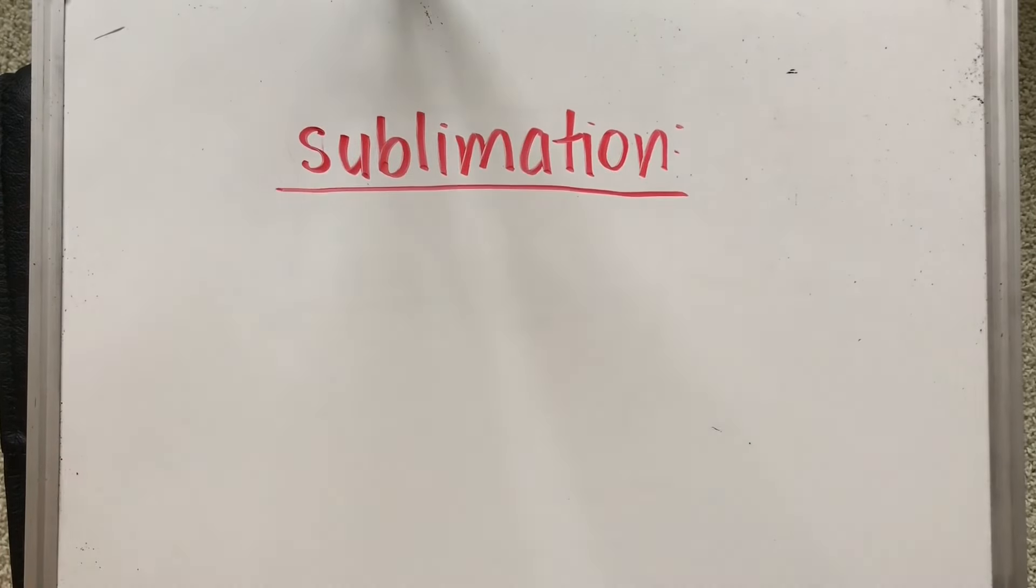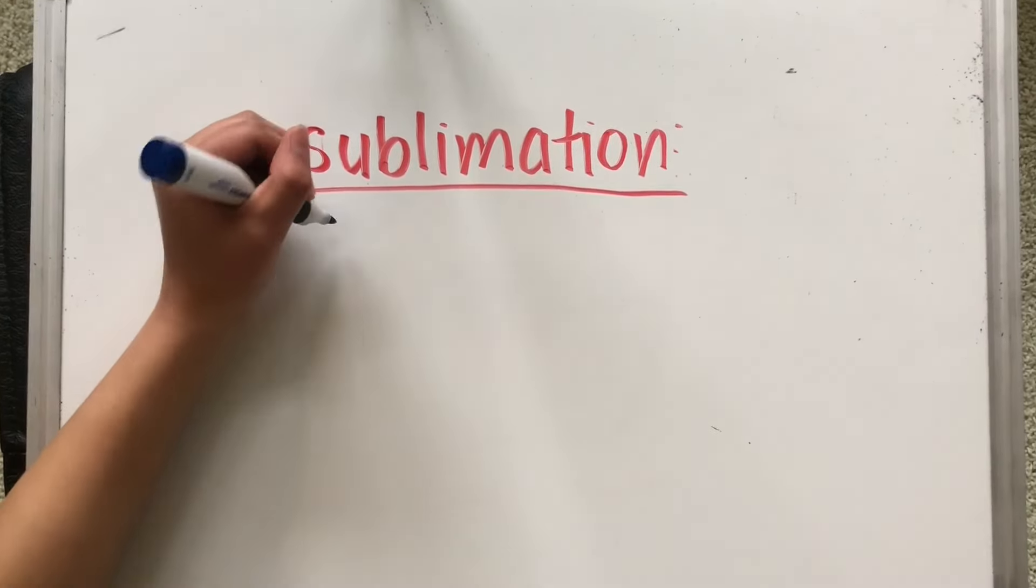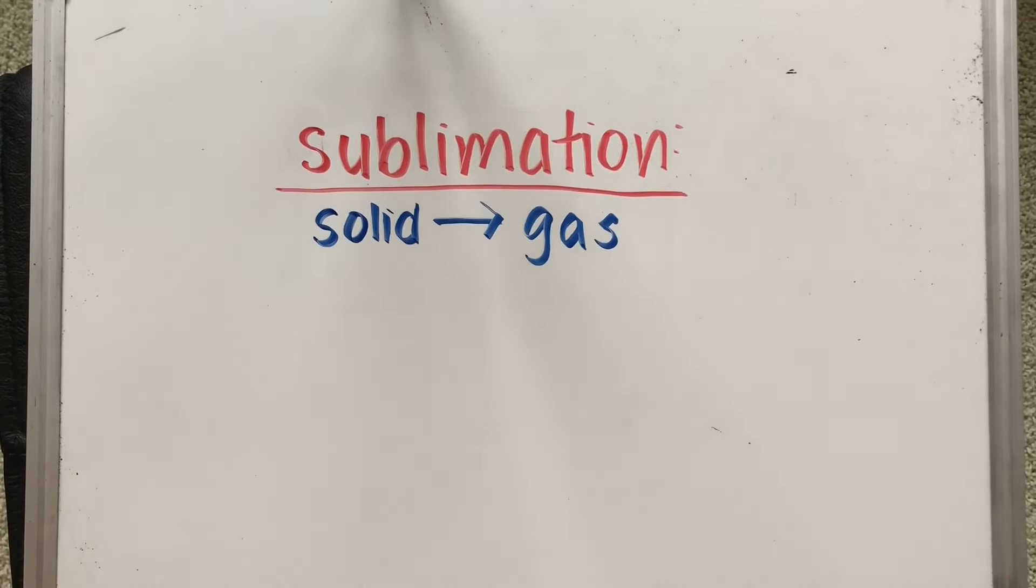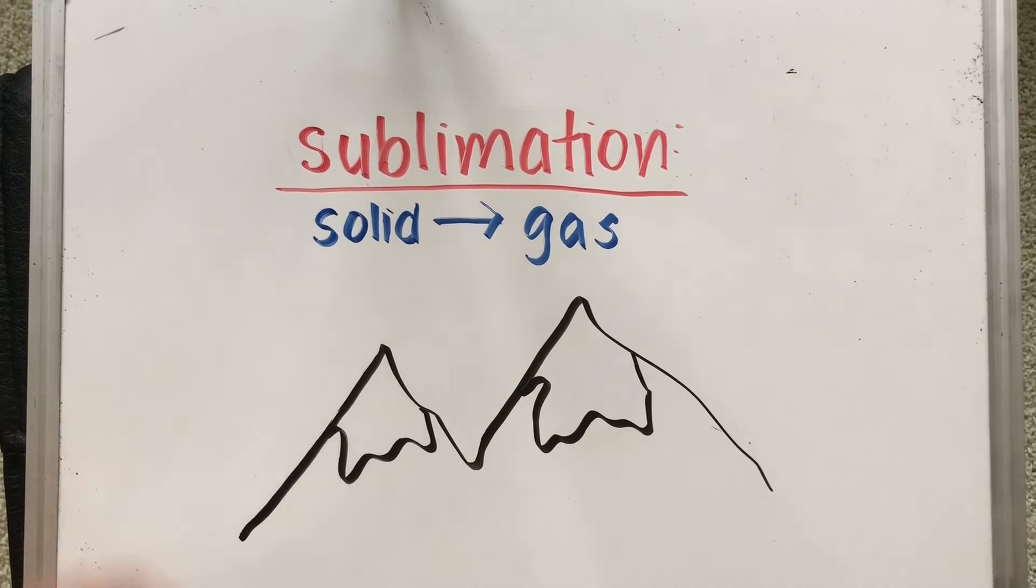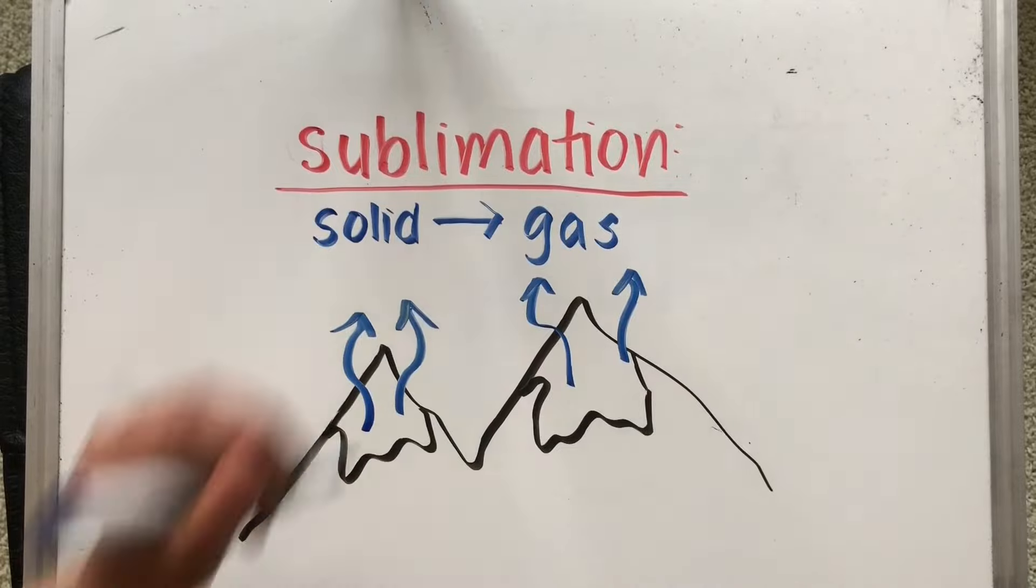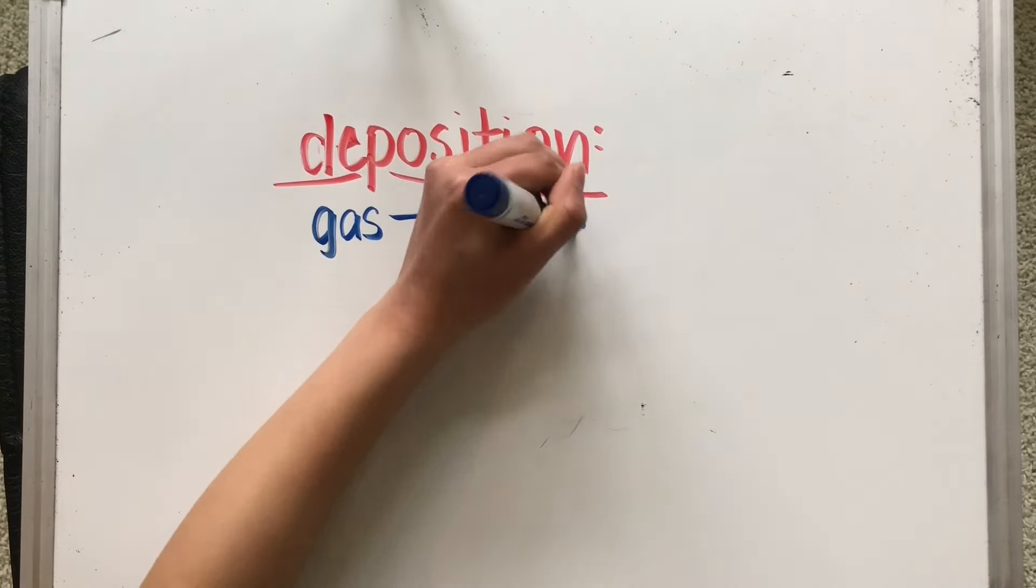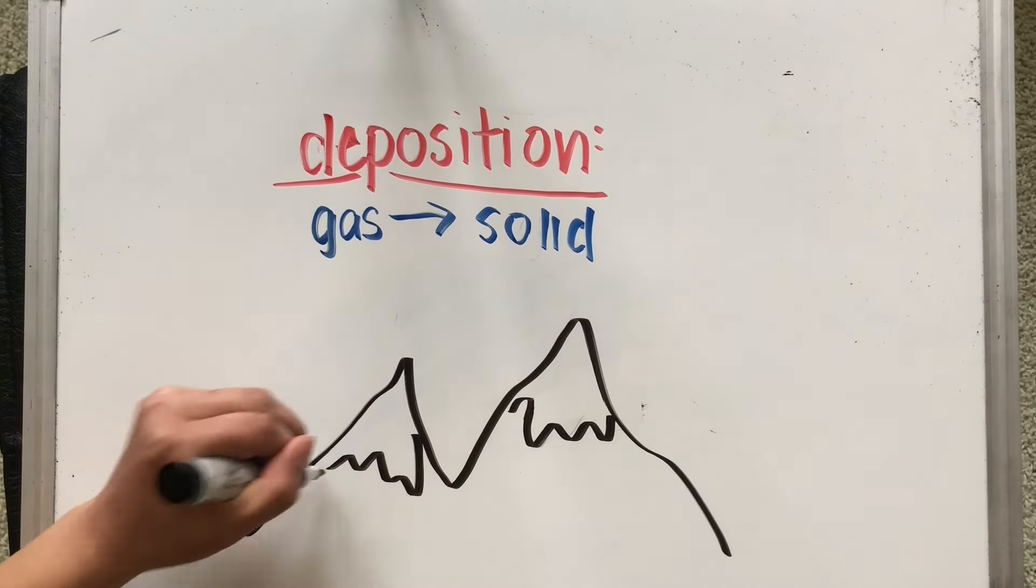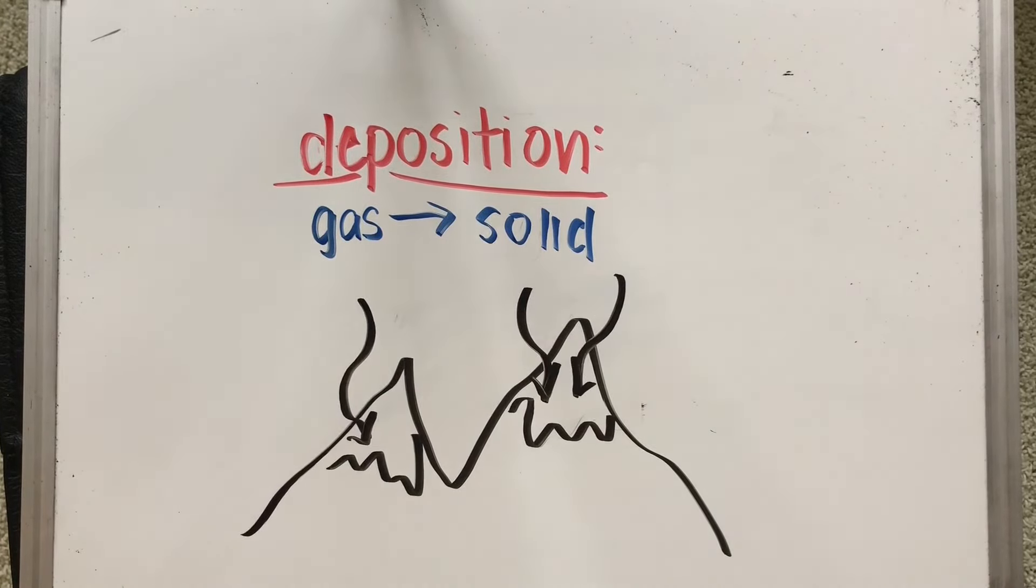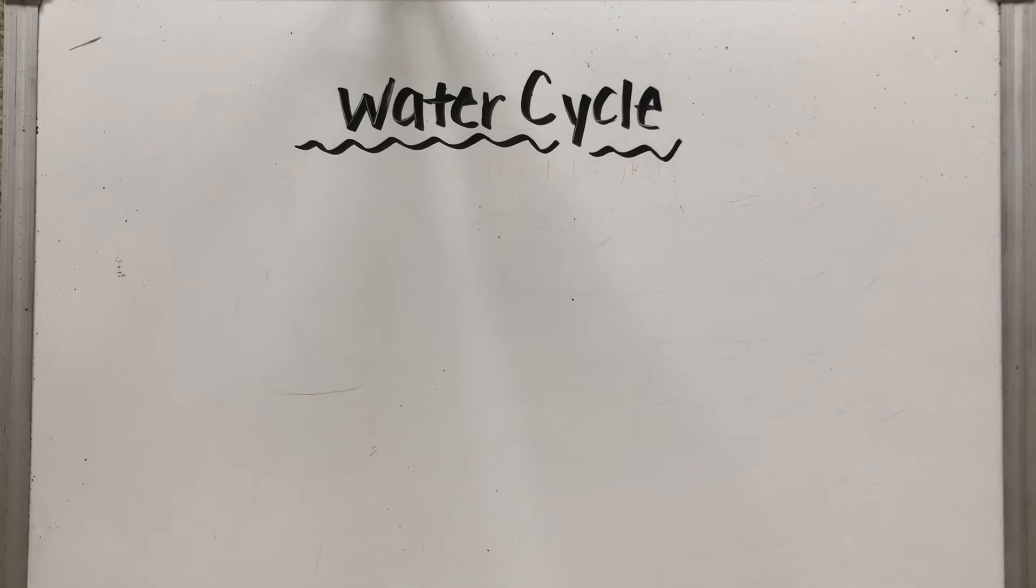While we commonly see water go from solid to liquid to gas, through a process called sublimation, water is able to go directly from a solid to a gas, much like ice directly to water vapor. The opposite is called deposition, in which water turns from a gas to a solid. This can happen at extremely cold temperatures when water vapor condenses to form ice.